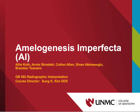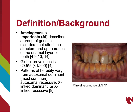Today, we will be talking about amelogenesis imperfecta. Amelogenesis imperfecta, abbreviated AI, describes a group of genetic disorders that affect the structure and appearance of the enamel layer, or outer layer of the teeth.